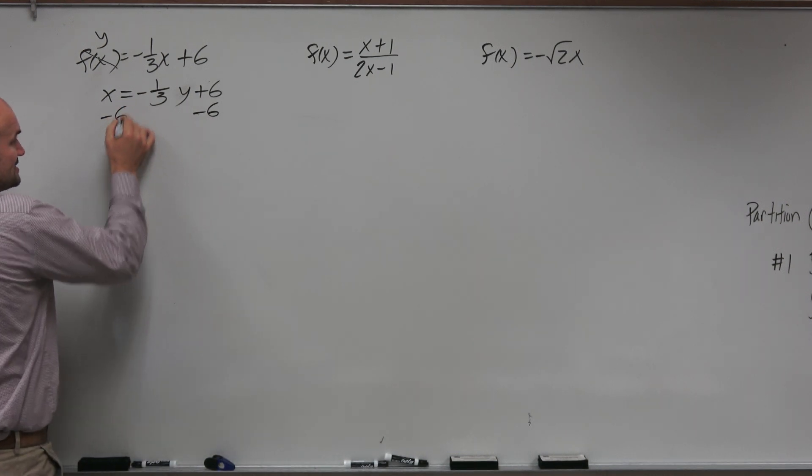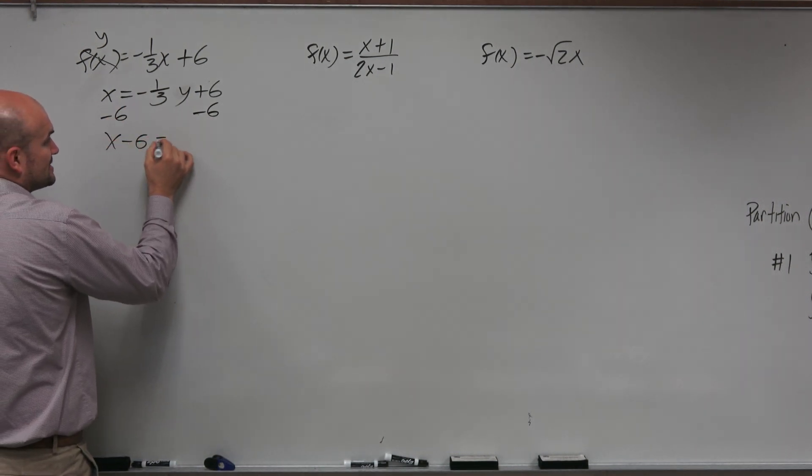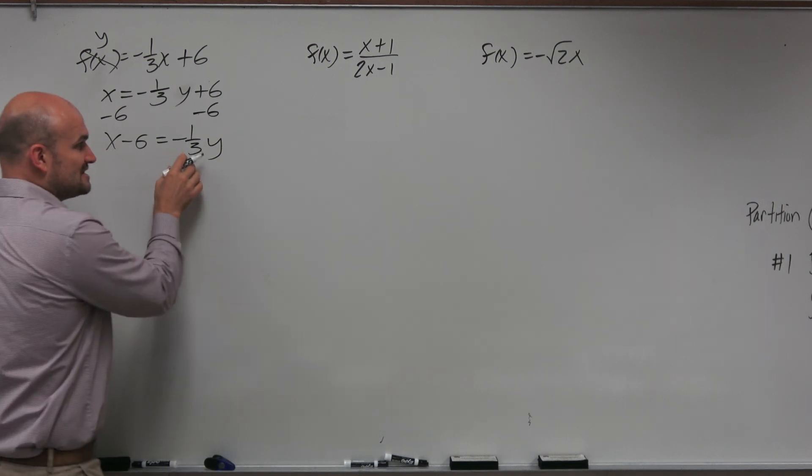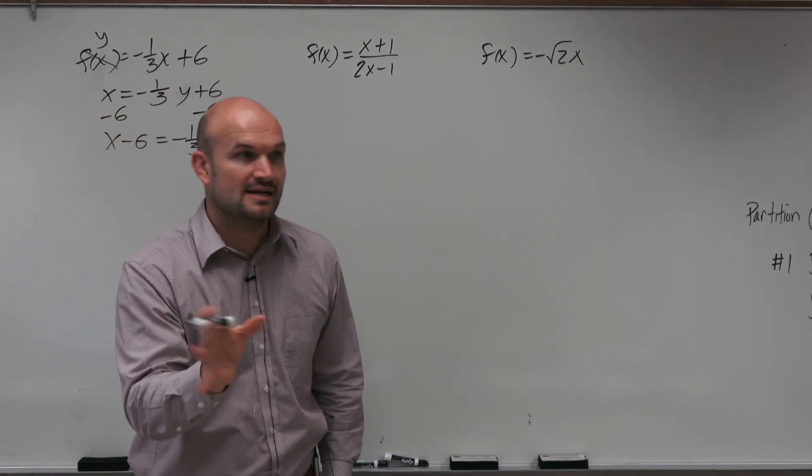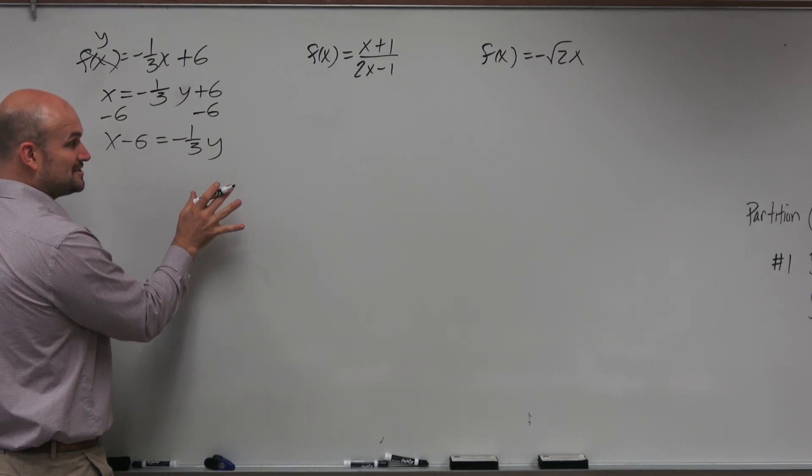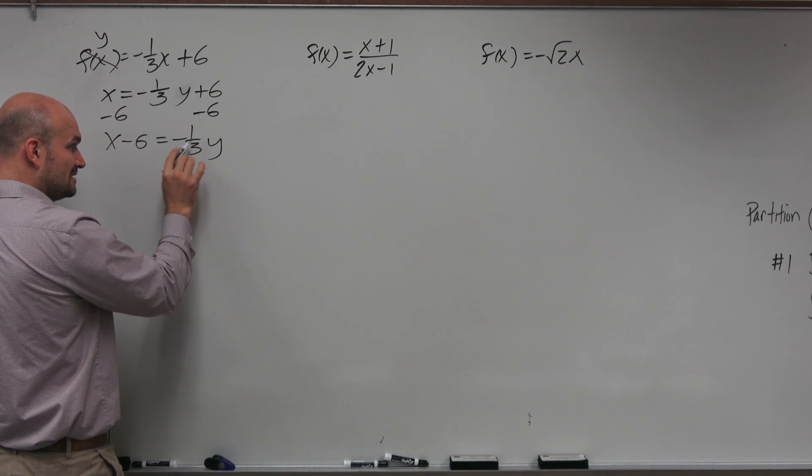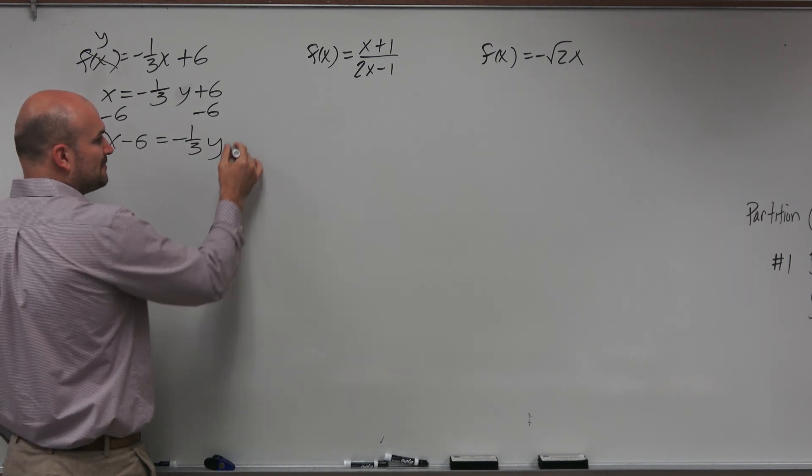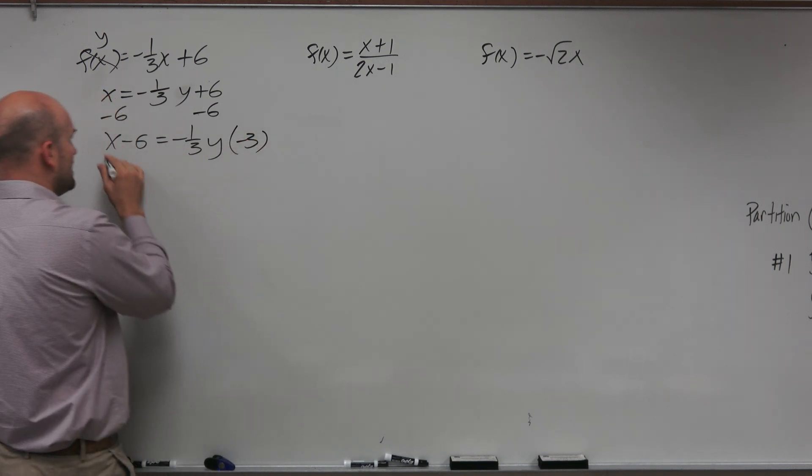So we're going to go ahead and subtract the six on both sides. We get x minus 6 equals a negative 1/3 y. A lot of students still do not like fractions. So a common mistake, but not the major mistake, is they need to get rid of this negative 1/3. I prefer to multiply by the reciprocal on both sides.